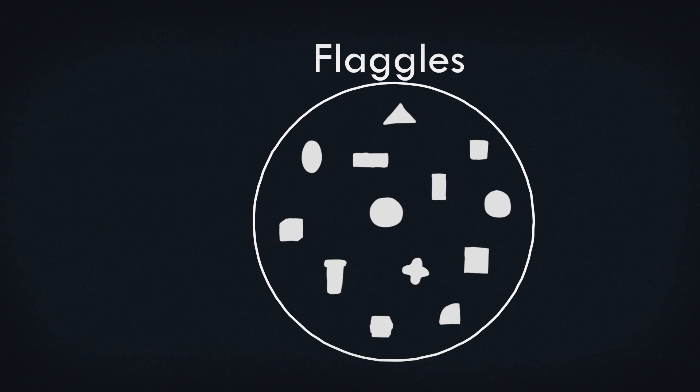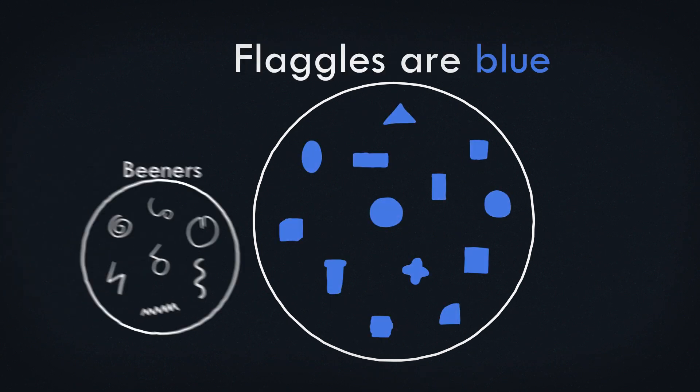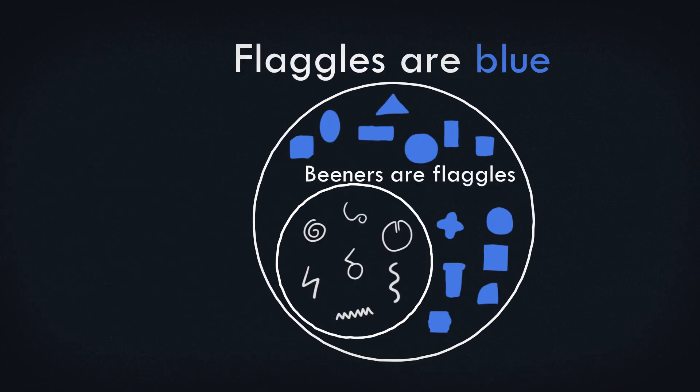We can do something like, if everything that we call a flagel is blue, and everything that we call a beaner is a flagel, if that's the information that we know, we should also be able to know that every beaner is blue. Even when they're nonsense words, the new ideas we come to make sense. Because it's creating a world in our mind, and seeing what we would absolutely have to observe in that world, because of the rules that we set.